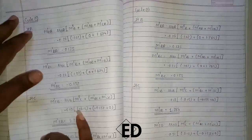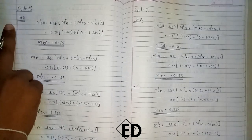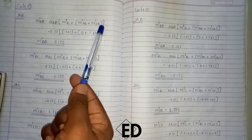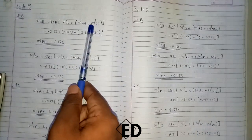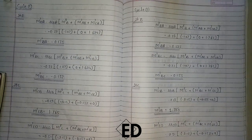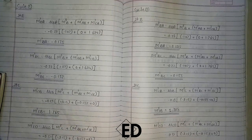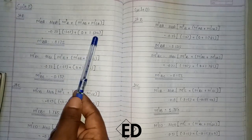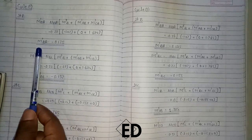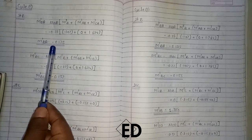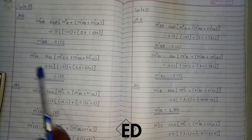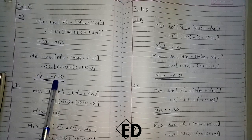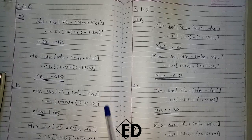Now moving towards the second cycle, which uses the same formula for every joint. We replace the previous rotational contribution from C to B with the new value of 1.694 from the last cycle. Putting this in the equation, the rotational contribution from B to A becomes minus 0.175. Similarly, the rotational contribution from B to C becomes M' BC = minus 0.137, and we similarly calculate for joint C.